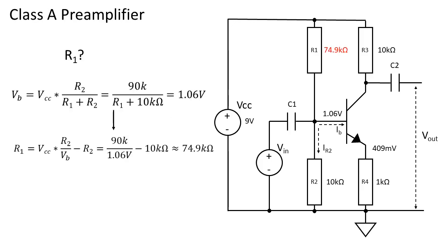All that is left is to finish the voltage divider by finding a value for R1. We already know the value of R2 and the expected base voltage. To calculate R1 we use the formula of Vcc times R2 over the base voltage minus R2. This results in a value of 74.9k ohms.